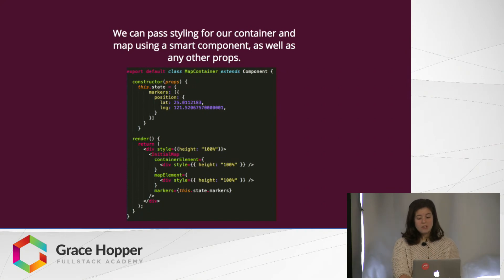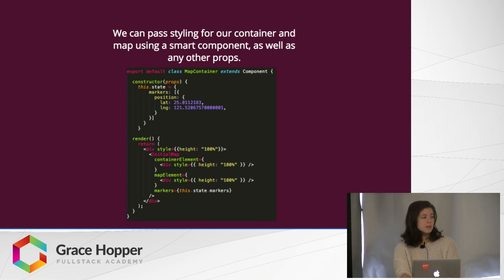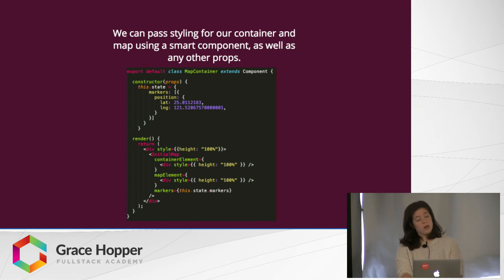After we've created our new map component, we create a smart container to pass down the necessary styles that our map needs. The initial map component needs both a height for its container and the map itself. These props are represented by container element and map element — just like in our previous vanilla JavaScript example where our map div needed a height property to render. We can also pass down any other props we'd like in this smart component.